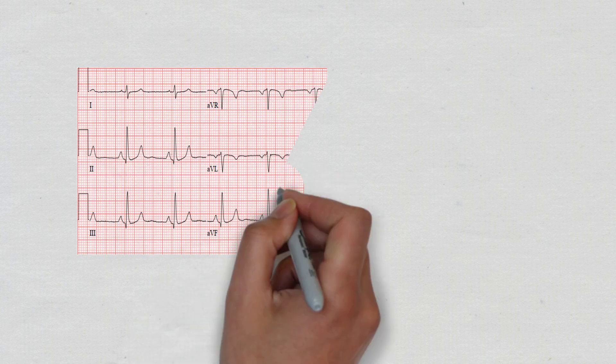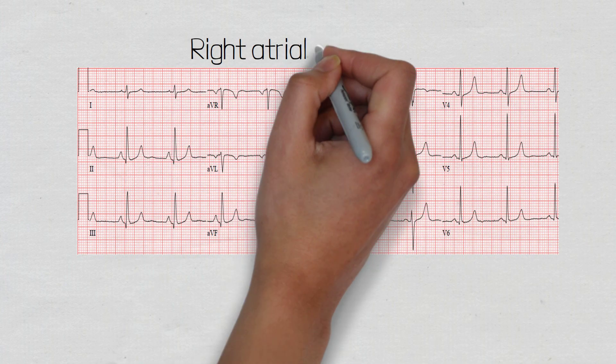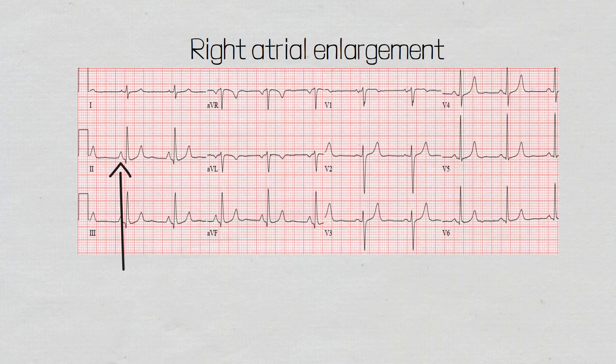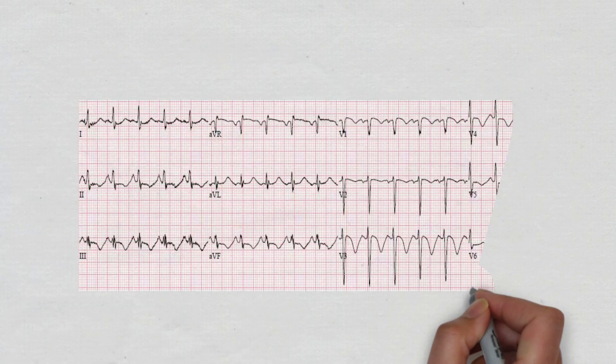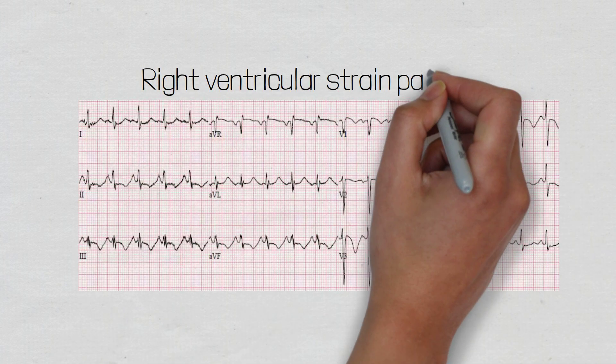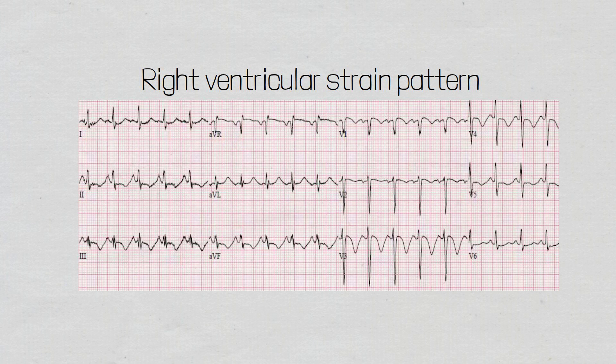An enlarged right atria may be present, which can be measured on the ECG by looking at the P wave. If the P wave measures 2.5 millimeters or higher, this could be a sign of an enlarged right atria, best seen in lead 2, and occurs in approximately 9% of patients with an acute pulmonary embolism. A right ventricular strain pattern presents with T wave inversion in V1 to V4, as these leads look directly at the right ventricle, and there may or may not be T wave inversion in leads 2, 3 and AVF. This pattern is seen in approximately 34% of patients with an acute PE and represents the difficulty the right ventricle has in overcoming the pulmonary artery pressures.